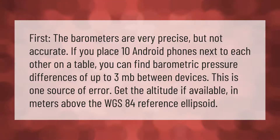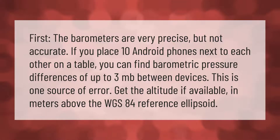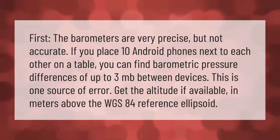The barometers are very precise but not accurate. If you place 10 Android phones next to each other on a table, you can find barometric pressure differences of up to 3 mb between devices. This is one source of error. Get the altitude, if available, in meters above the WGS 84 reference ellipsoid.